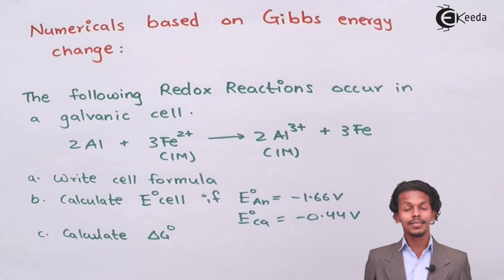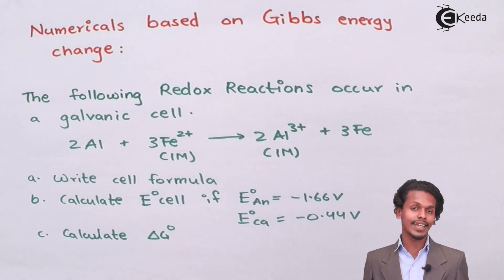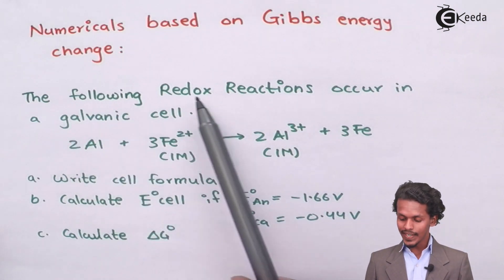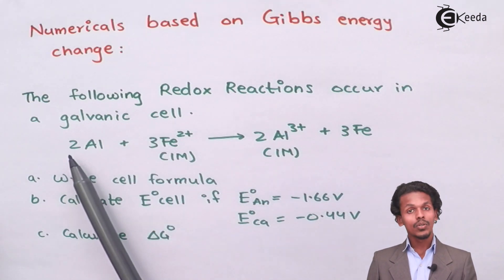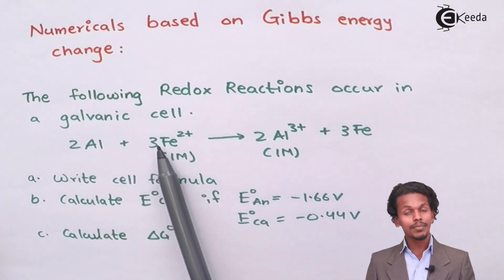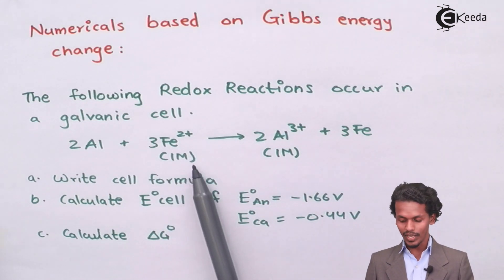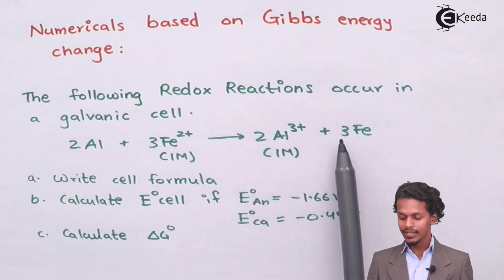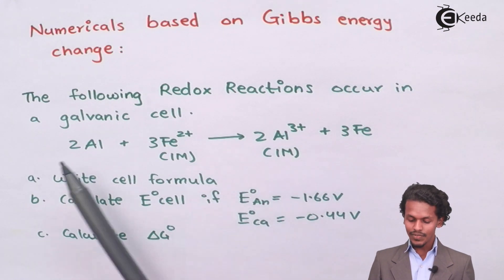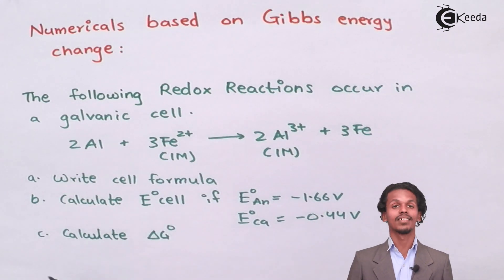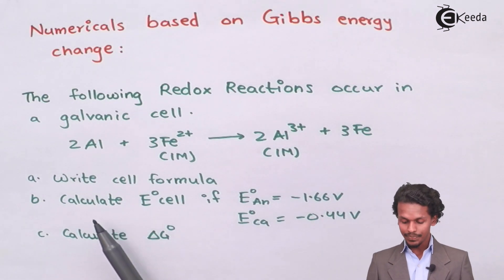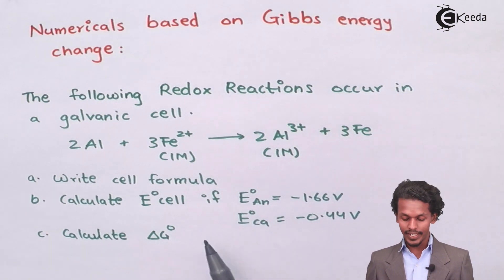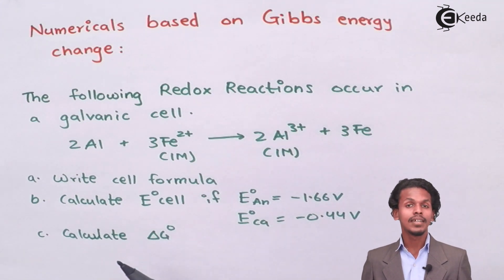Before going to the numericals, let us see the question. The following is the redox reaction in a galvanic cell in which 2 moles of aluminium reacts with 3 moles of Fe²⁺ ion at a concentration of 1 molar, giving 2 moles of Al³⁺ plus 3 moles of Fe. We have to write the cell formula, calculate E° cell given E° of anode and cathode, and calculate ΔG°.